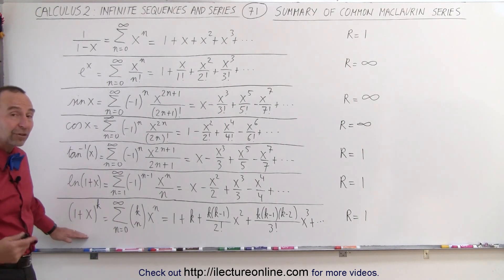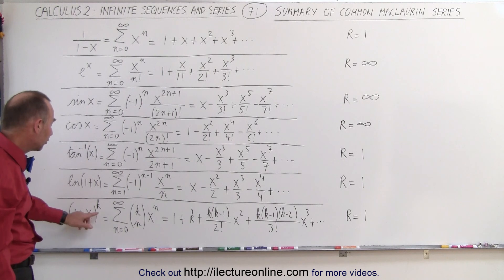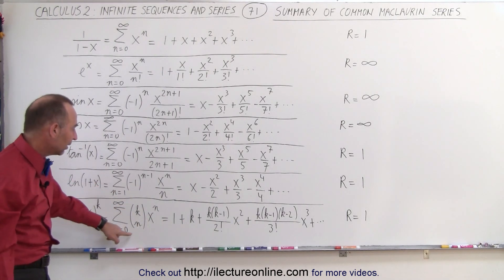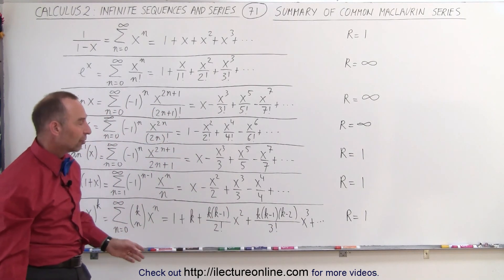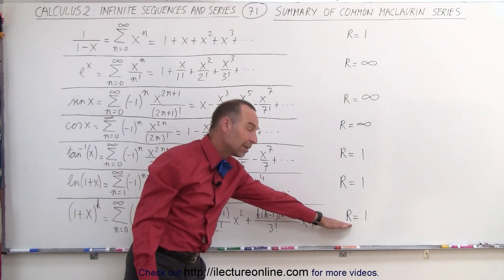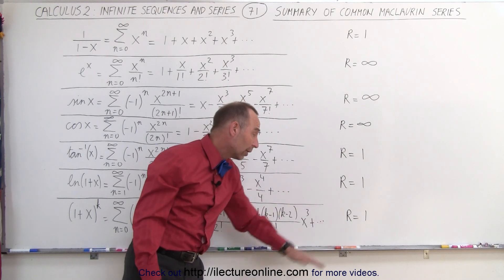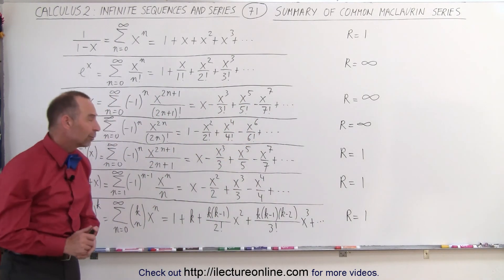And finally, the binomial expansion, the one that we just saw in the last few videos, 1 plus x to the k power, we can write it in a compact form like this, which can be written out as the infinite series here. Again, we expect the value of x to be between negative 1 and 1, the radius of convergence is equal to 1.